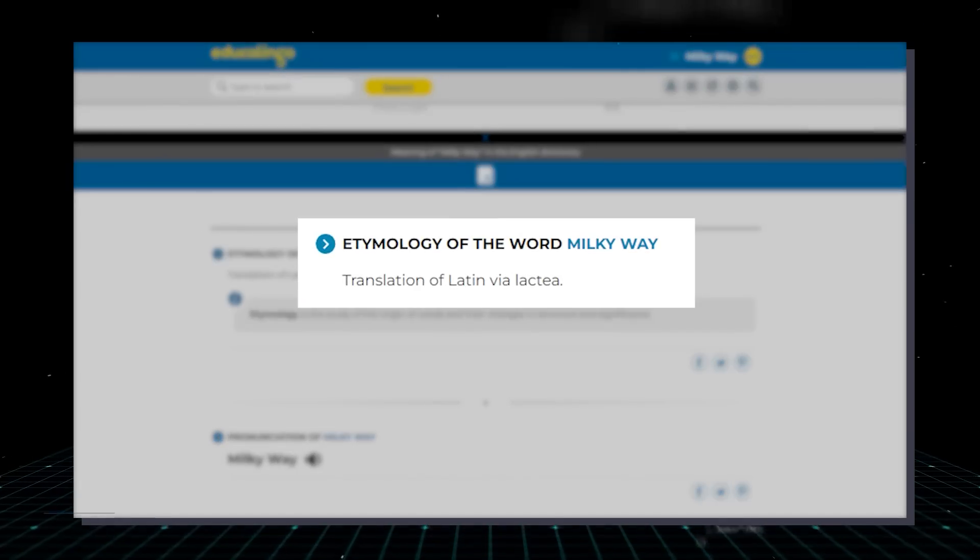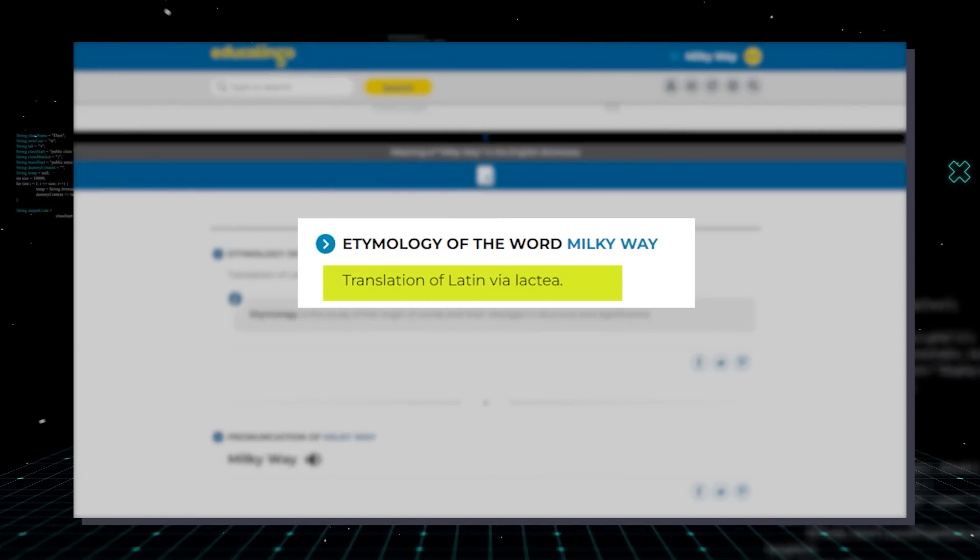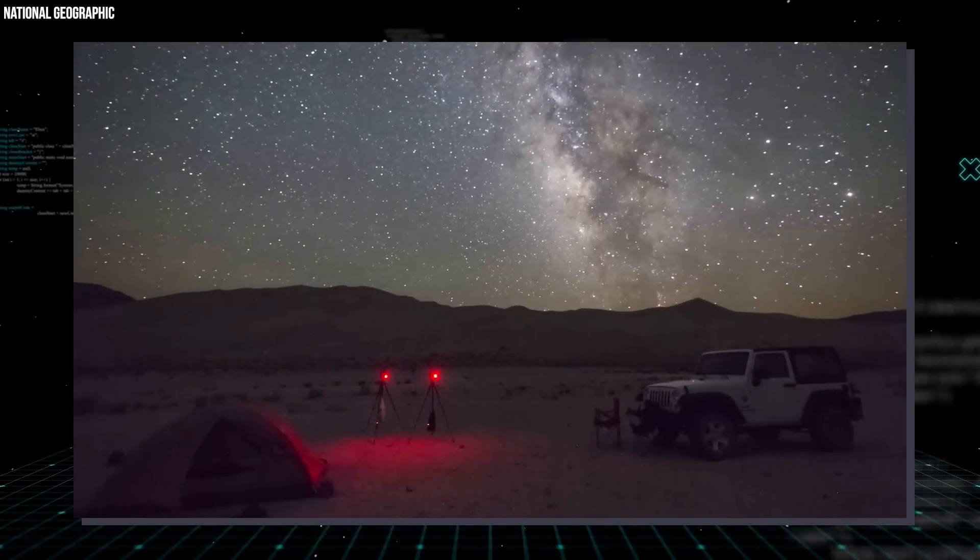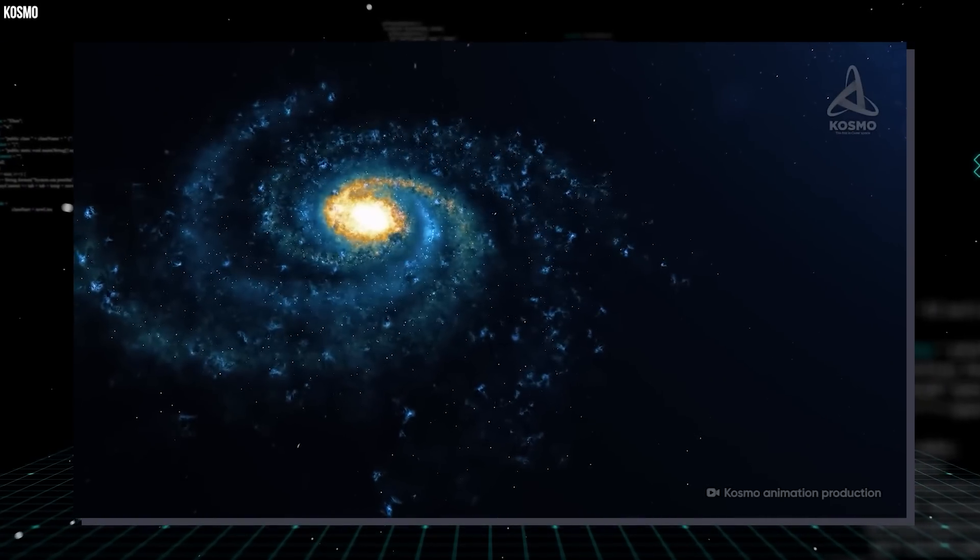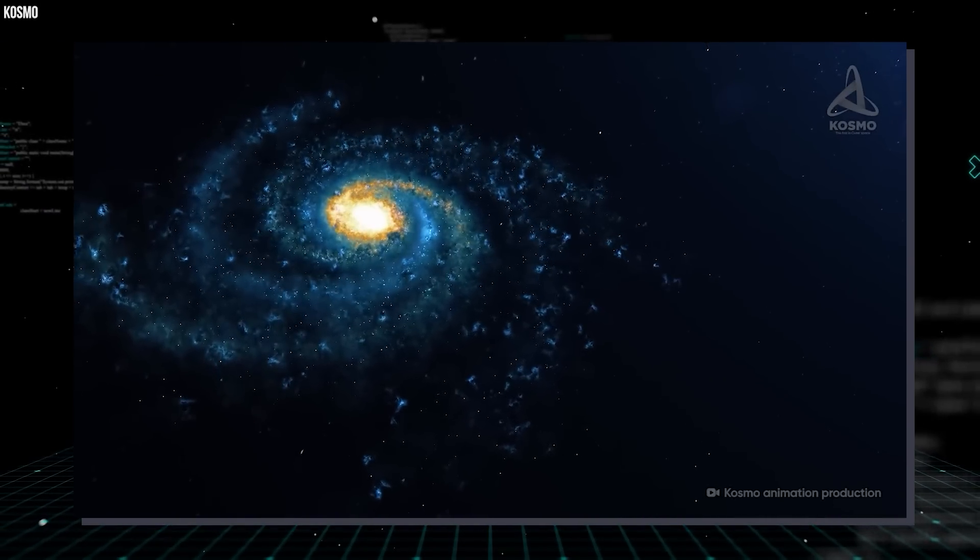Milky Way is a translation of the Latin word lactia, meaning Milky Circle. The Milky Way looks like a thin band when seen from the Earth's surface because the disc-shaped structure of the galaxy is being viewed from within.